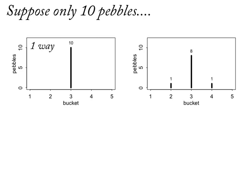Let's think about an extreme distribution with only 10 pebbles — the lesson will be fine with 10. There's only one way to get all the pebbles in bucket three. Now let's take one pebble from bucket three and move it to bucket two, and one from bucket three to bucket four, giving us: one pebble in bucket two, eight in bucket three, and one in bucket four. How many different arrangements of individual pebbles can make that distribution? The answer is 90 ways to do this.